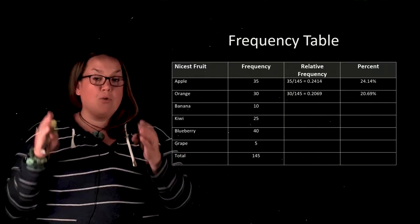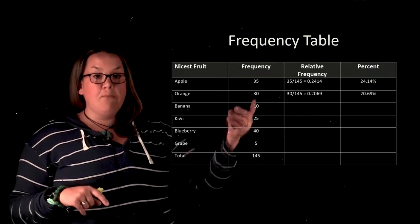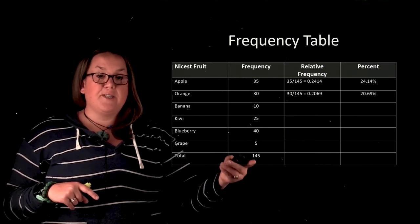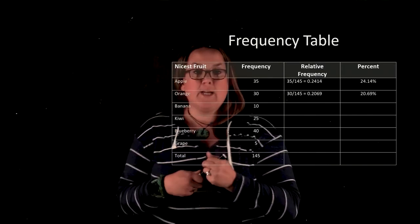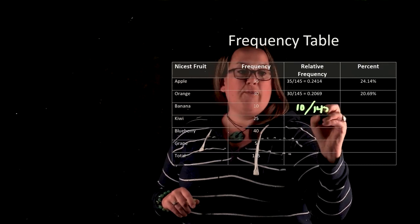Relative frequency is going to be the frequency relative to the total. That's how it gets its name, so the numerator is the frequency and the denominator is the total. They're very easy to calculate. Here for banana I would just have 10 out of the 145.